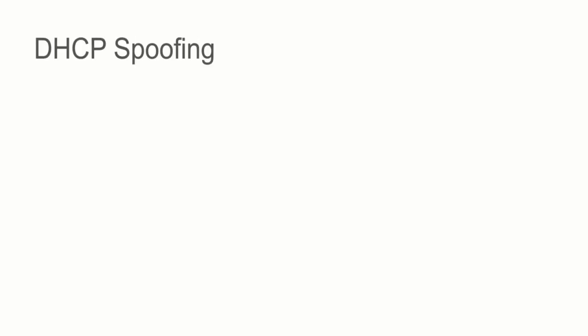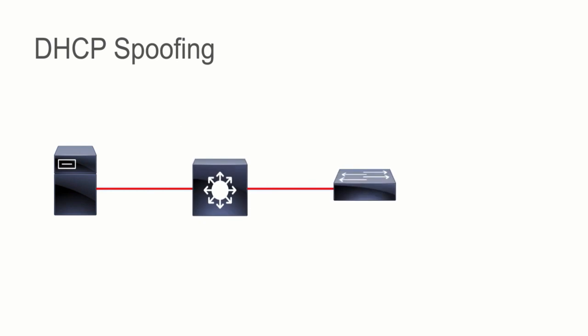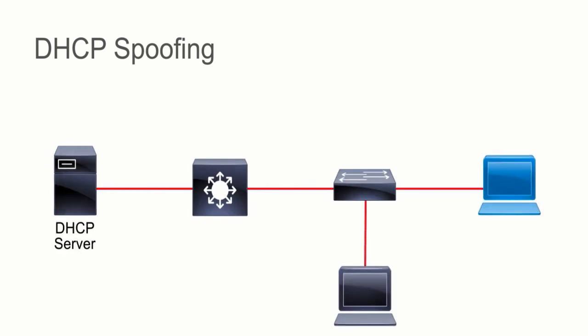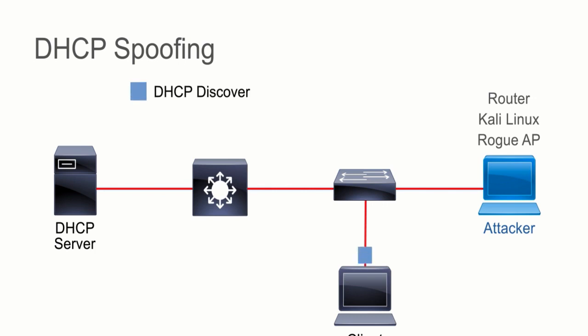The other type of attack that we see is a DHCP spoofing attack. We have our real DHCP server, we have a real client, and then we have an attacker that comes onto the network. This could be in many forms — a rogue access point that was plugged in, someone running Kali Linux, or a little home router that somebody brought in and plugged into the port at their desk. What happens is the client sends out a DHCP discover message.